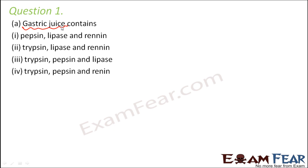In the stomach, mostly digestion of proteins and fats takes place. The enzyme that helps in digestion of proteins is pepsin. So pepsin, lipase and renin are present in gastric juice. Renin is used for digestion of milk and is present only in infants. Trypsin is not present in gastric juice at all — trypsin comes from the pancreas, so any option with trypsin is incorrect.